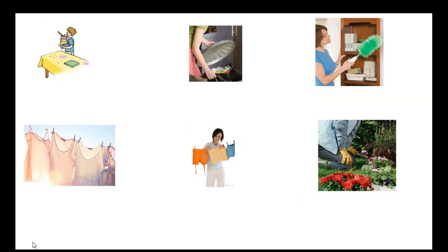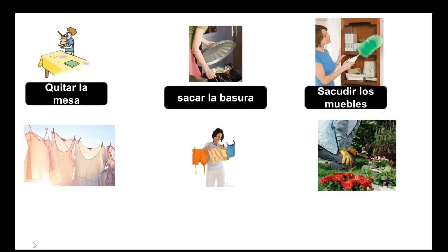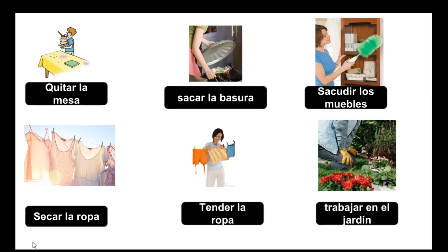¿Cómo se dice 'to clear the table'? Quitar la mesa. ¿Cómo se dice 'to take out the trash'? Sacar la basura. ¿Cómo se dice 'to dust'? Sacudir. ¿Los muebles? Los muebles means furniture — so, to dust the furniture. ¿Cómo se dice 'to dry the clothes'? Secar la ropa. ¿Cómo se dice 'to hang the clothes'? Tender la ropa. ¿Cómo se dice 'to work in the garden'? Trabajar en el jardín.